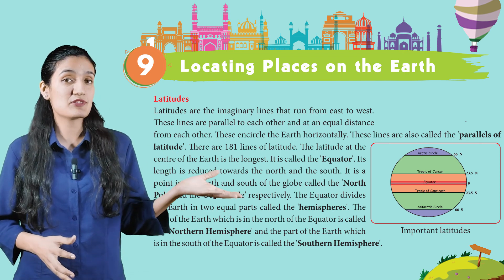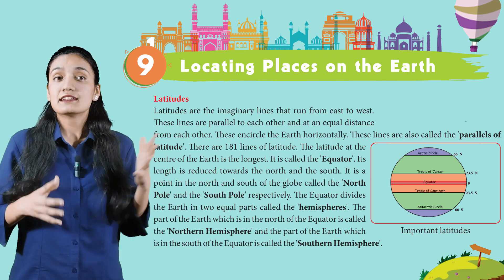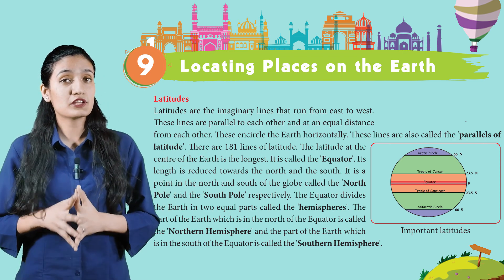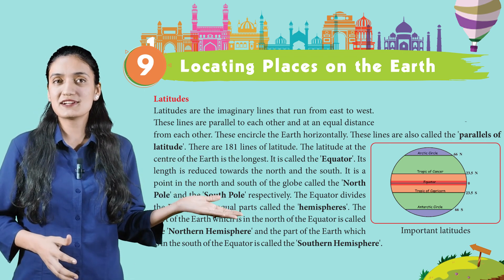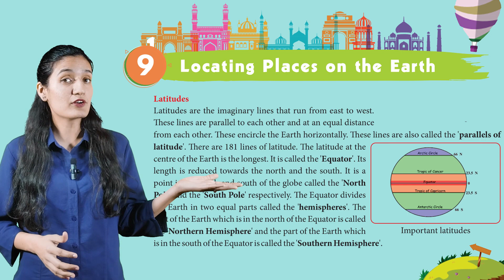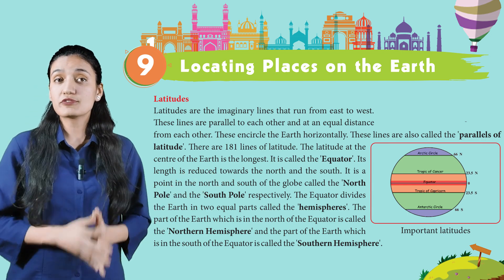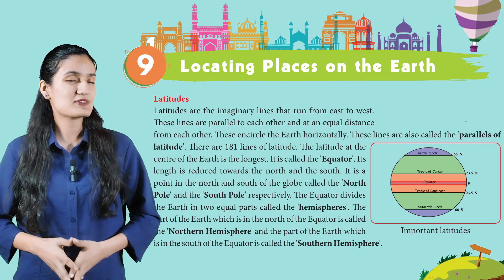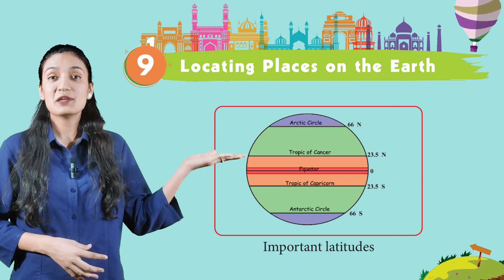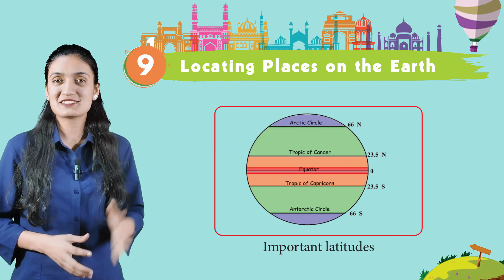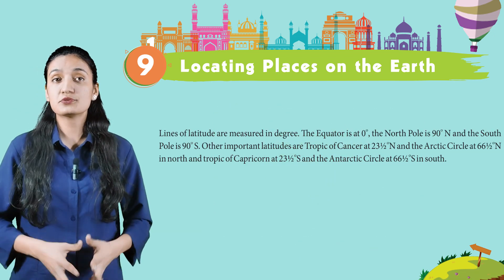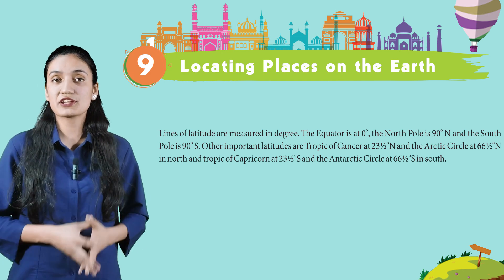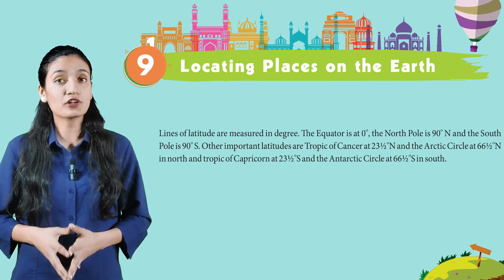The north and south ends of the globe are called the North Pole and South Pole respectively. The equator divides the Earth into two equal parts called hemispheres. The part of the Earth which is north of the equator is called the Northern Hemisphere, and the part which is south of the equator is called the Southern Hemisphere. Here in the picture you can see the important latitude lines.